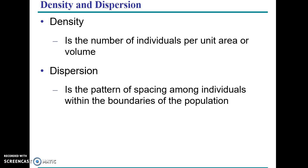Density is how many people are living in a particular unit of area. The most densely populated part of the world is Bangladesh - there are more people living within a square mile in Bangladesh than anywhere else. Within the United States, New Jersey has a high density of population, but when you go to the Midwest - like Wyoming - there are very few people living in the whole state, giving it a very low density.